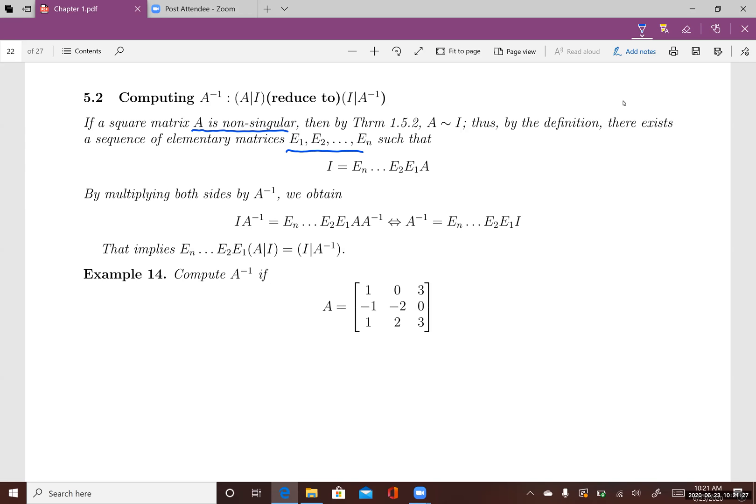From this equation, you can multiply both sides by A inverse because A is non-singular. As you can see, A times A inverse is just I, and I times A inverse is just A inverse. So look at these equations here.